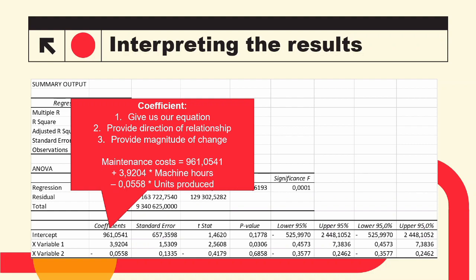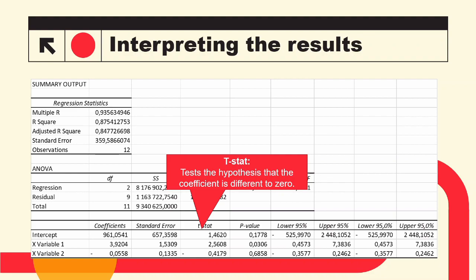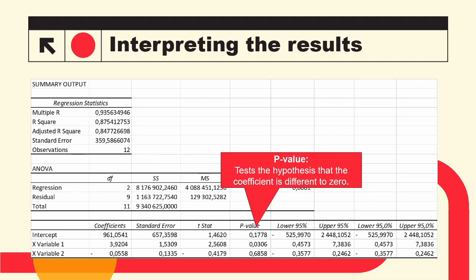It is strange that units produced has a negative relationship, as we would expect more units produced to be related to more maintenance costs. This is where the t-stat and p-value come in. The t-stat tests the hypothesis that the coefficient is different from zero and needs to be compared to the appropriate t-value — at 95% confidence the t-value needs to be greater than 1.96. The p-value is a two-tailed test; at 95% confidence it needs to be less than 0.05. Machine hours does have explanatory power with a p-value of 0.03, but neither the intercept nor units produced are statistically significant, as their p-values are greater than 0.05.